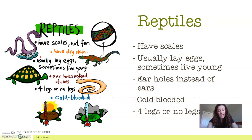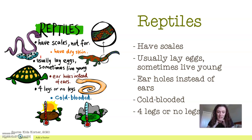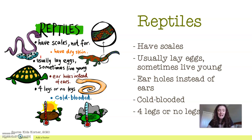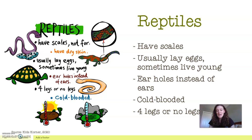Earlier I mentioned that they are reptiles, which means they have scales. They usually lay eggs, but sometimes they give birth to live young. They have ear holes instead of ears, just like our bird friends. They are cold-blooded, which means they are hot if the environment is hot, and cold if the environment is cold. They either have four legs or no legs — I did not know that about reptiles. And they have scales, not fur, and they tend to have dry skin. If you've ever held a reptile, they normally don't have that slimy skin that amphibians tend to have.